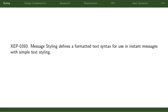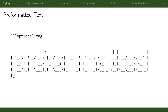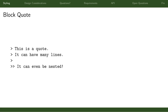Message styling is a simple text syntax for use in instant messages to add simple styles. It has inline styles such as emphasis, which is normally italicized; strong emphasis, which is bold; strikethrough, self-explanatory; and pre-formatted text, which is normally displayed monospace. It also has some block styles like a pre-formatted text block and block quotations, which can be nested and rendered in a number of different ways.